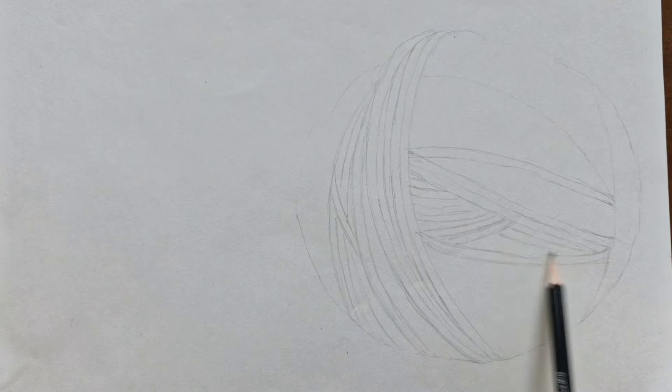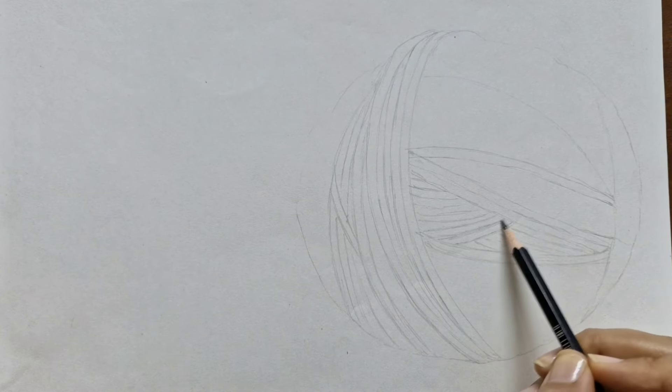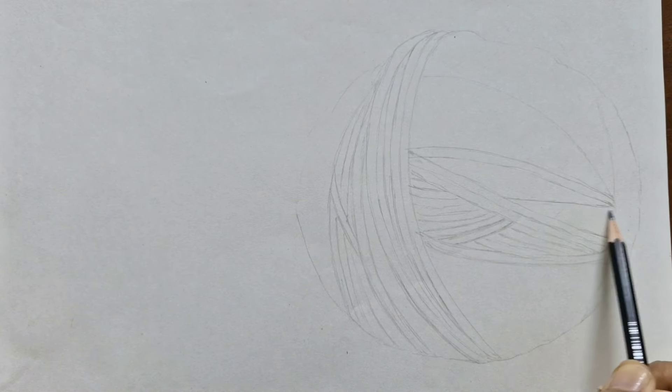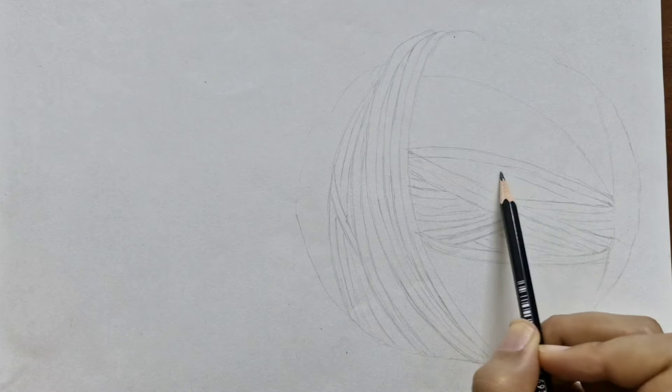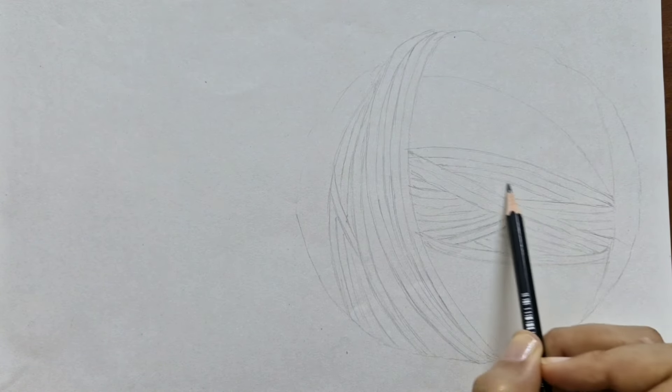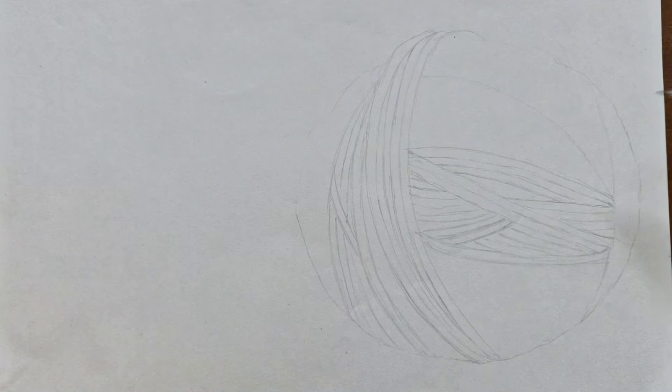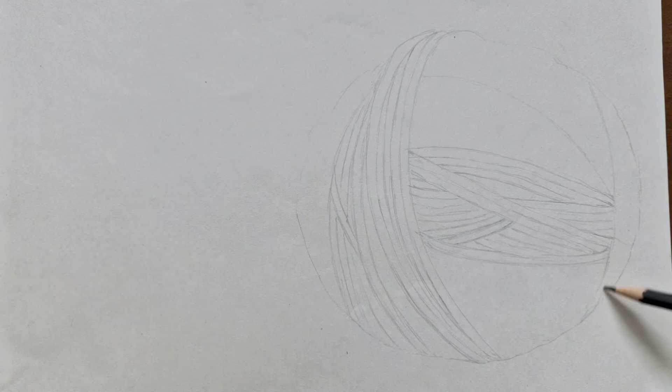To make things a bit easier you can sketch out some basic lines and sections in your circle first. Then when you add the yarn threads it'll be like following a road map. This step takes time and a lot of patience but trust me it's worth it.